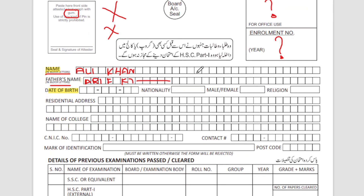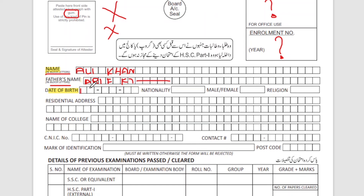After writing the exact name, you have to write the address. You should not cross anything out or use any correction — just leave a blank if needed. Then we have to write the date of birth. For date of birth, be careful — whatever you have written in your documents, you must fill it in exactly the same way.